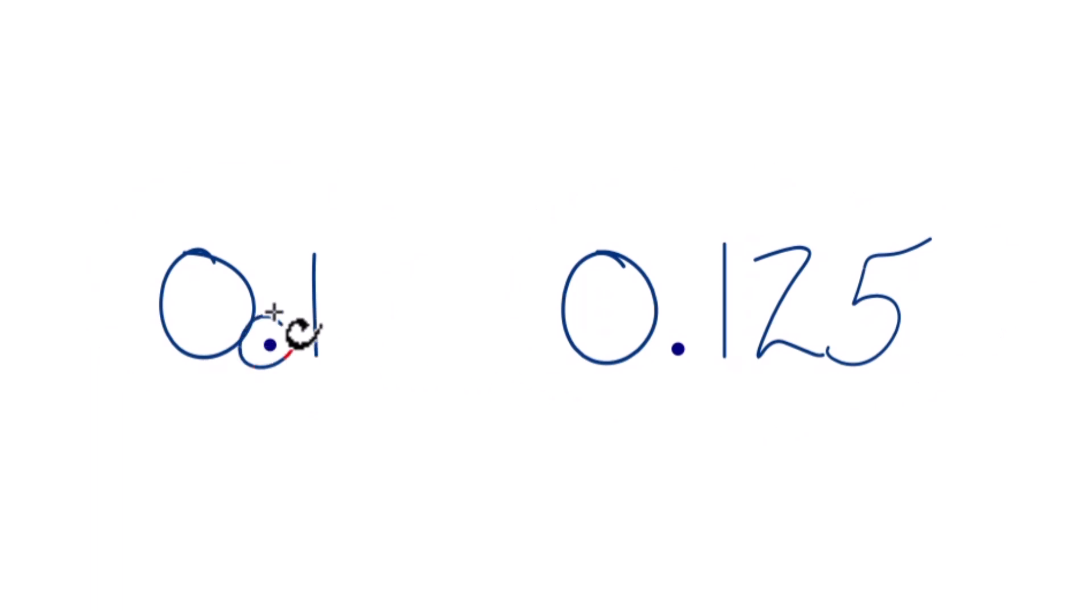We look at the decimal point, we look at the first number after the decimal point, that's the tenths place. Over here for 0.125, first number after the decimal point is the tenths place, here is one, so these are the same.